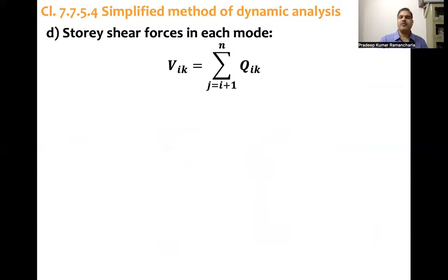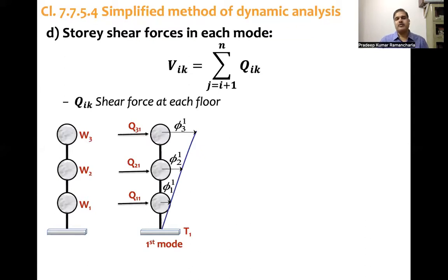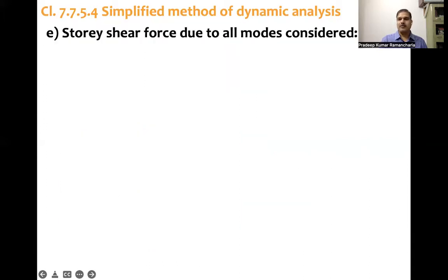Story shear force in each mode: Vik is summation from j equals i plus 1 to n of Qjk. This is just a cantilever kind of analogy. In the earlier slide we discussed how to calculate Q11, Q21, and Q31. Simply V31 equals Q31, V21 equals this plus both these levels third plus second, and V11 will be Q31 plus Q21 plus Q11.